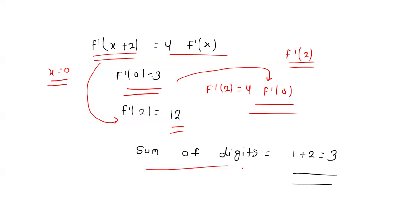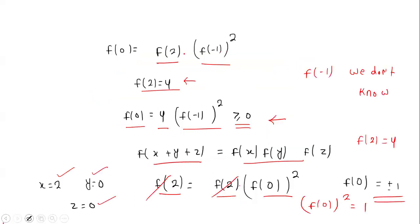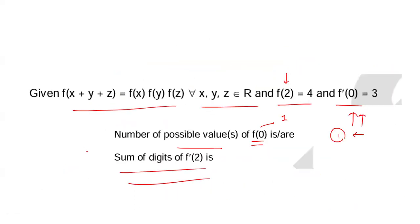The sum of digits of f'(2) = 12 is 1 + 2 = 3. So the answers are: the number of possible values of f(0) is 1, and the sum of digits of f'(2) is 3. Thank you.